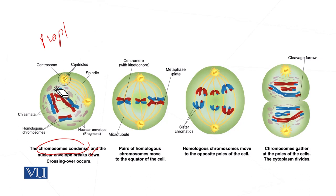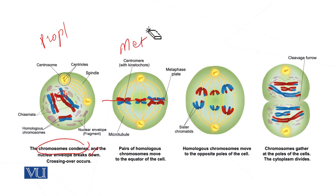After the exchange of genetic material, in the next phase, the chromosomes are aligned in the center, which is known as metaphase 1. After metaphase 1, the chromosomes are pulled apart by the spindle fibers, which is called anaphase 1.